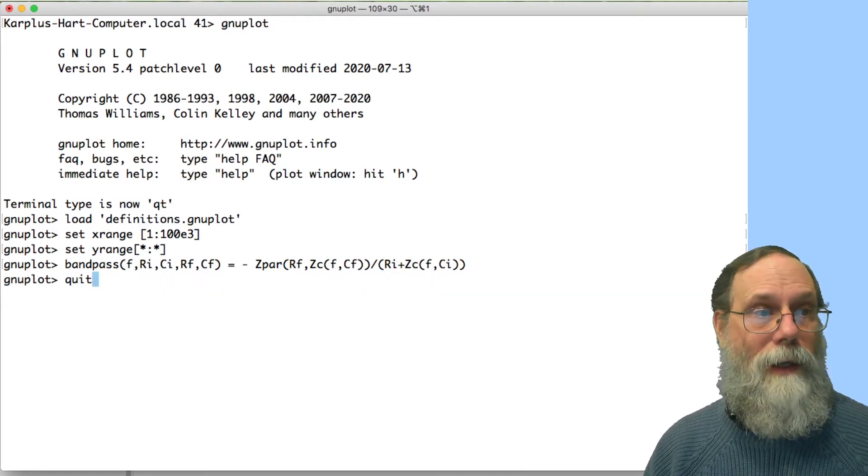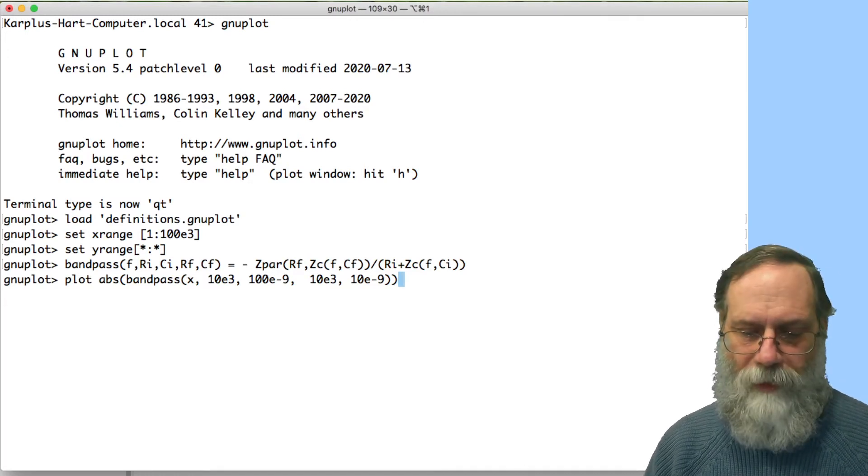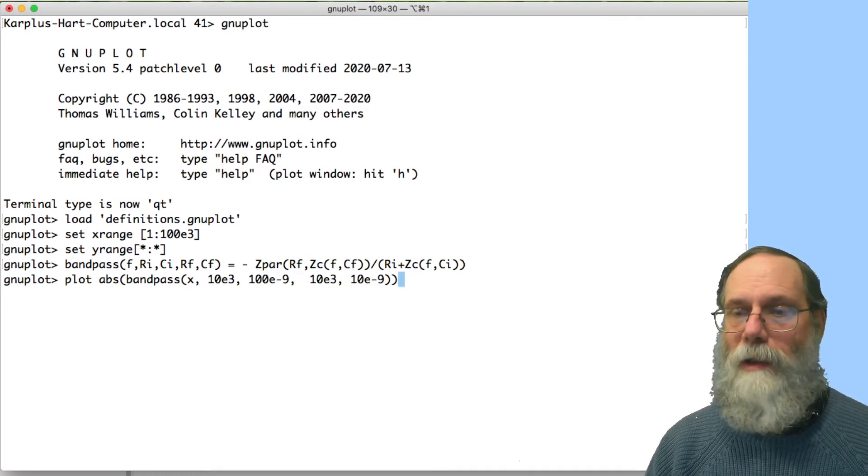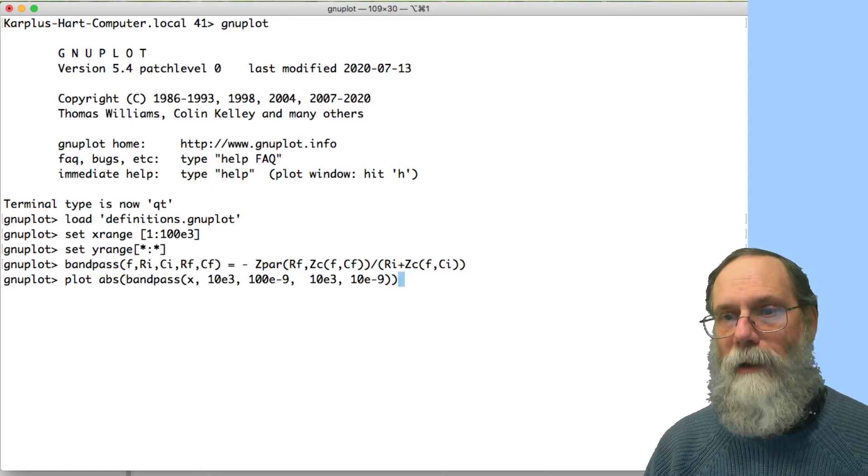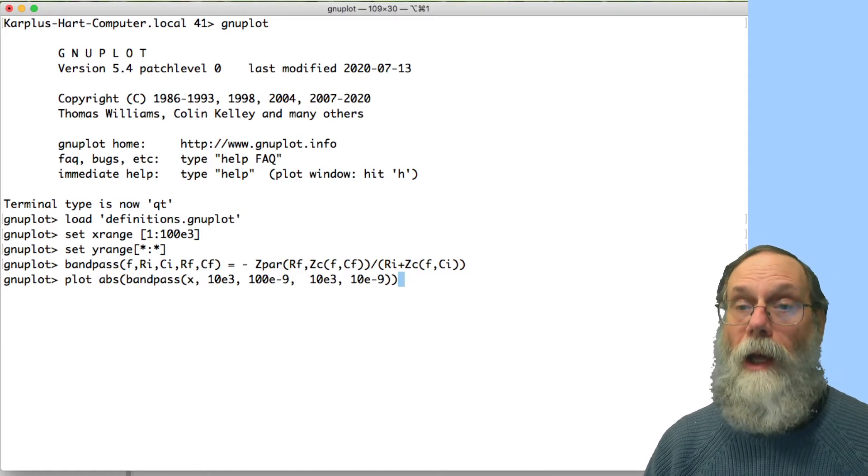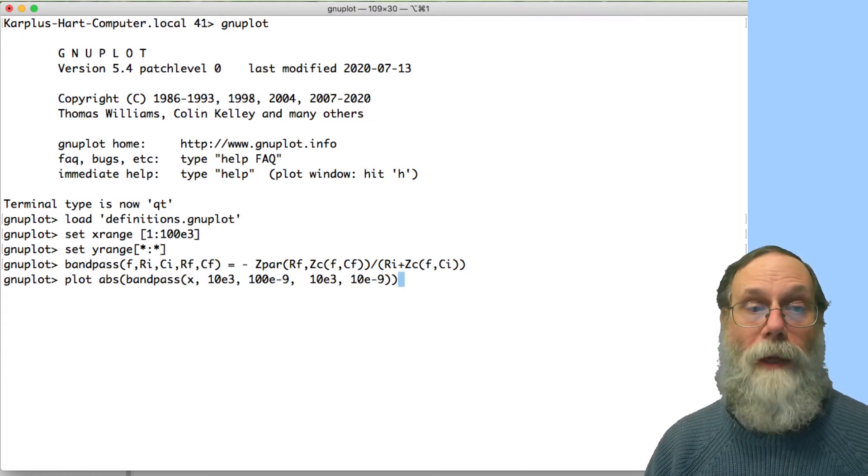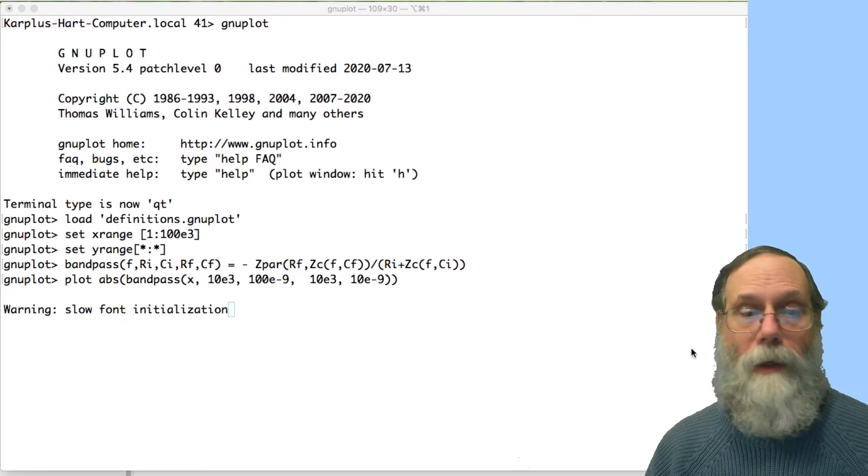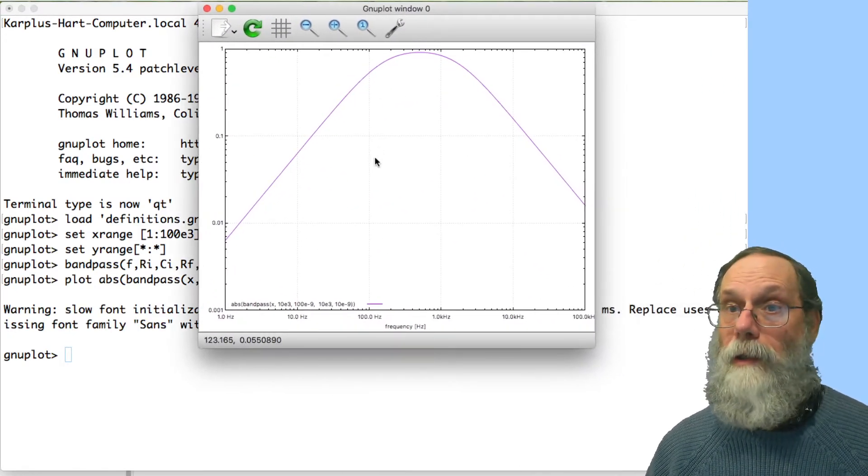Having done that, I can now plot that. And I picked some reasonable values here just to get a plot. So 10 kilo ohms, 100 nanofarads for the input impedance, and 10 kilo ohms and 10 nanofarads for the feedback impedance.